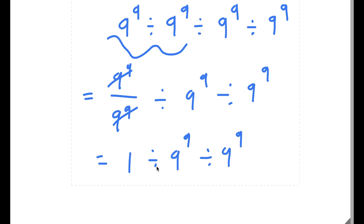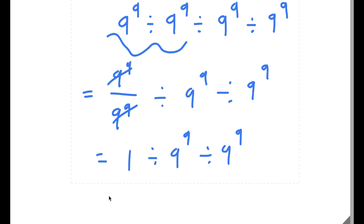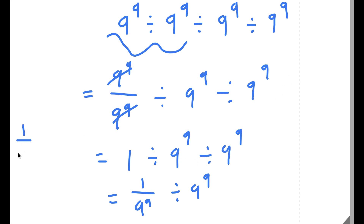Now we do 1 divided by 9 to the power of 9, which equals 1 over 9 to the power of 9. Now, if I have something in the form 1 over a to the power of n, this is the same thing as a to the power of negative n. So 1 over 9 to the power of 9 equals 9 to the power of negative 9. Then I have this divided by 9 to the power of 9.